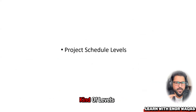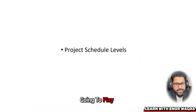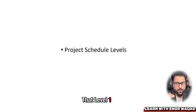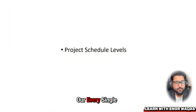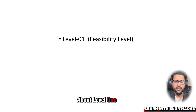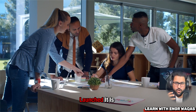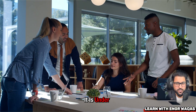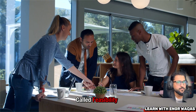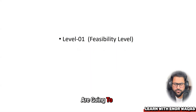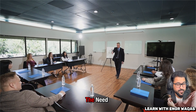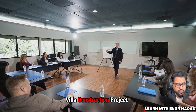Just remember this terminology: project schedule levels. Whenever there is a project, there are different kinds of levels. Think of it like a mobile game — you cross level one, level two, level three, level four. The same thing happens in projects. Level one is when your project is launched, under consideration, or under study — that is called feasibility.